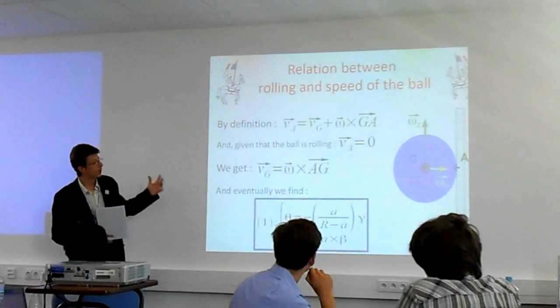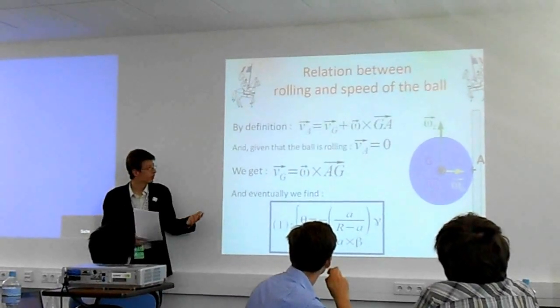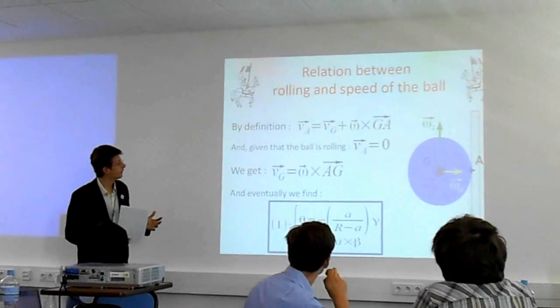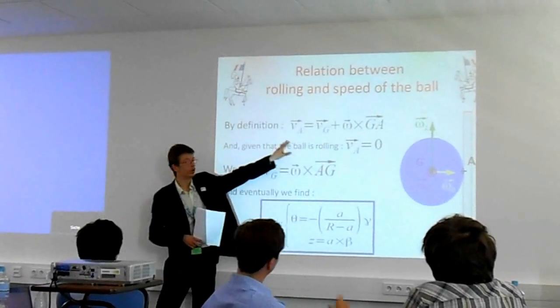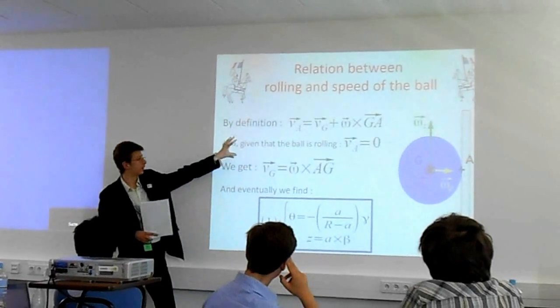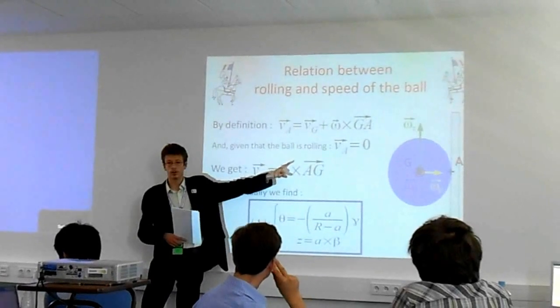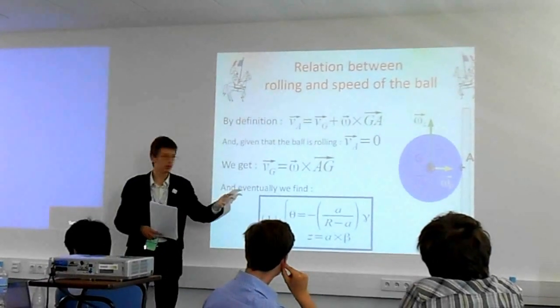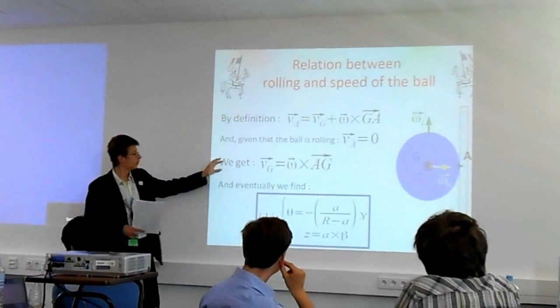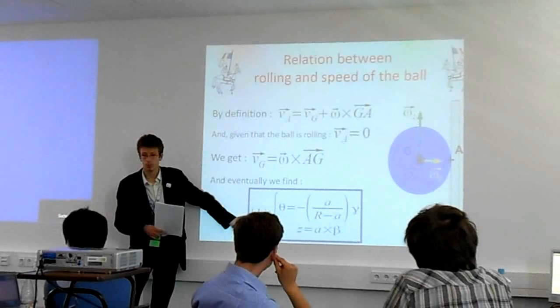We're now going to try to relate the rolling of the ball with the speed. To do so, we use this formula we have up here, which is granted for any rolling object. Given that we assume that the ball rolls without sliding, we have the speed at the contact point with the surface, which values zero. We can thus get this equation and after a calculation, we find set of equations number one.